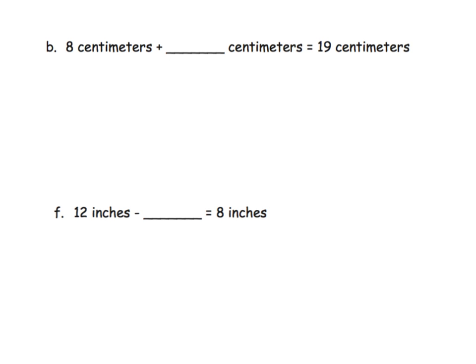Now we are making it a little bit more abstract because we're not actually talking about actual physical measurements now. We're just talking about numbers with particular units attached. So we've got 8 centimeters plus how many centimeters equals 19 centimeters.